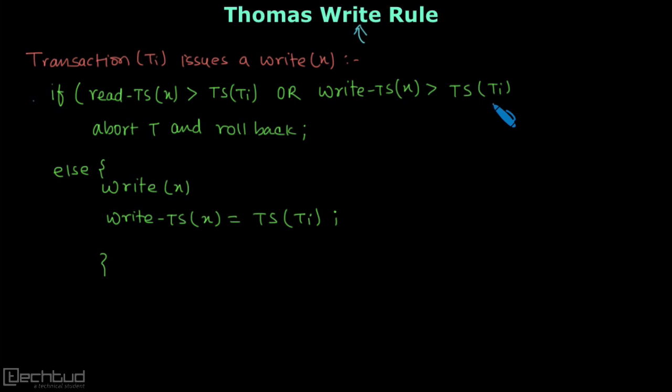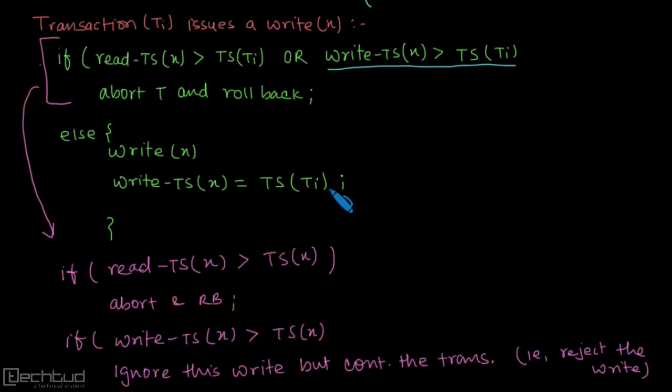Now we know that in view serializability we ignore blind writes, and that is why this case where a later transaction has done some write operation over this variable X is ignored in Thomas Write Rule. So we will write it differently again. This is the main modification I have written it separately.